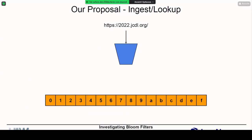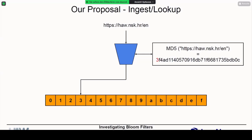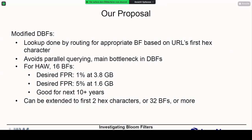Here's how it works: we have our 16 bloom filters, and a routing box that takes an input URL — say 2022.jcdl.org — creates an MD5 hash of that string. If the hash value starts with '2', that URL is ingested into the bloom filter named '2'. For HA, if the hash value starts with '3', it goes into the bloom filter named '3'. Ingest and lookup are done in the same way. This eliminates the drawback of dynamic bloom filters, so no parallel lookup is needed — it's much, much faster, and the false positive rate remains mostly stable.